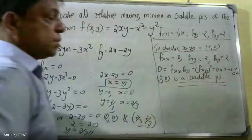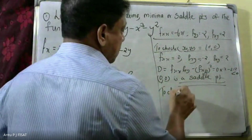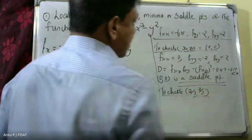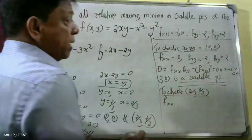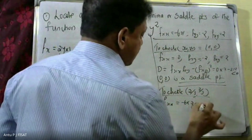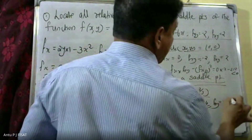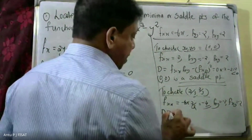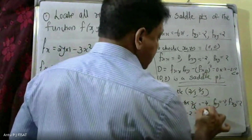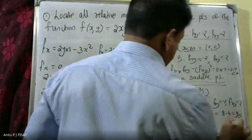Next, check the critical point (2/3, 2/3). Calculate fxx at (2/3, 2/3): minus 6 times 2/3 equals minus 4. fyy remains minus 2 and fxy remains 2. Calculate D equals minus 4 times minus 2 minus 2 squared, that is 8 minus 4, which equals 4.